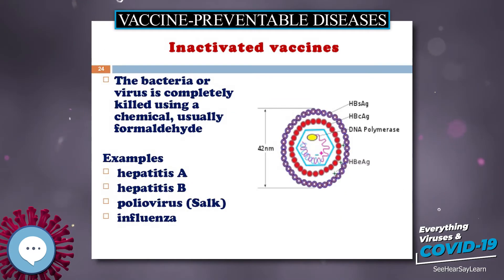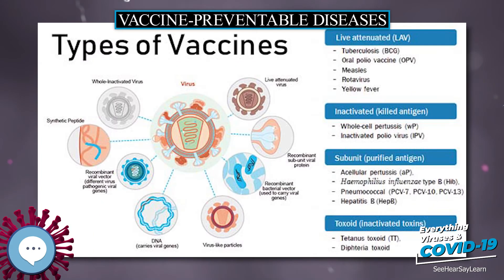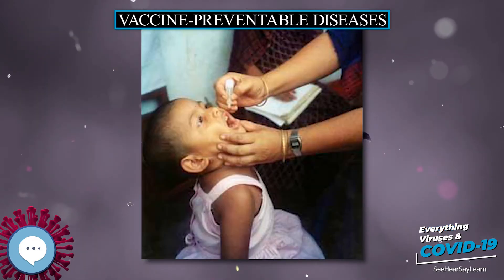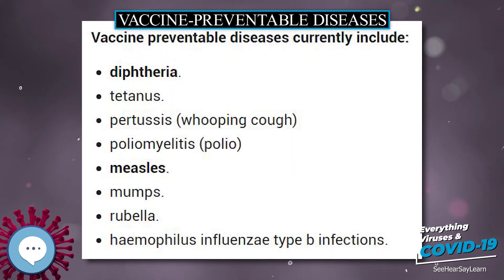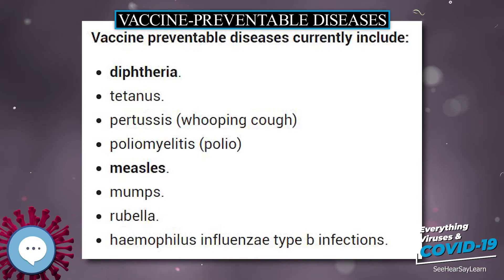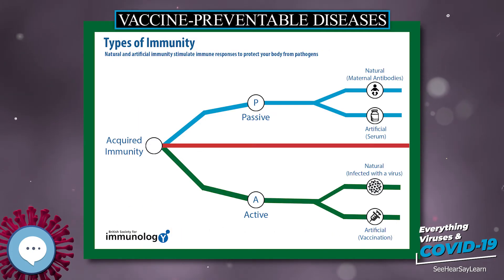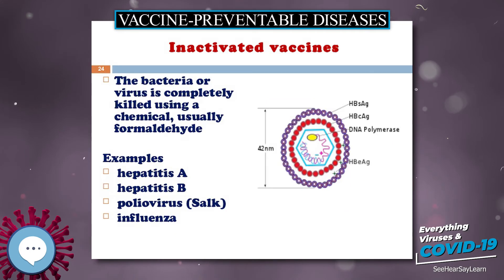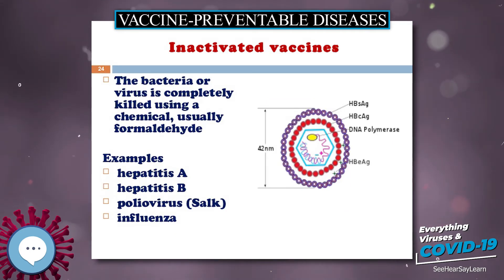The most common and serious vaccine-preventable diseases tracked by the World Health Organization are diphtheria, haemophilus influenza serotype B infection, hepatitis B, measles, meningitis, mumps, pertussis, poliomyelitis, rubella, tetanus, tuberculosis, and yellow fever. The WHO reports licensed vaccines being available to prevent, or contribute to the prevention and control of, 25 vaccine-preventable infections.